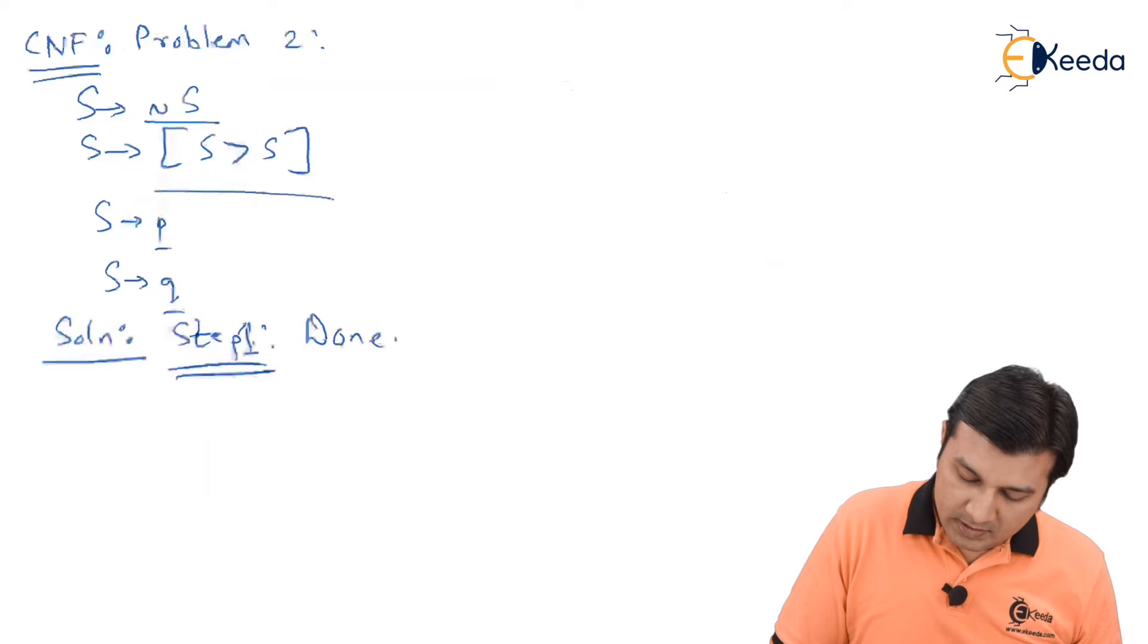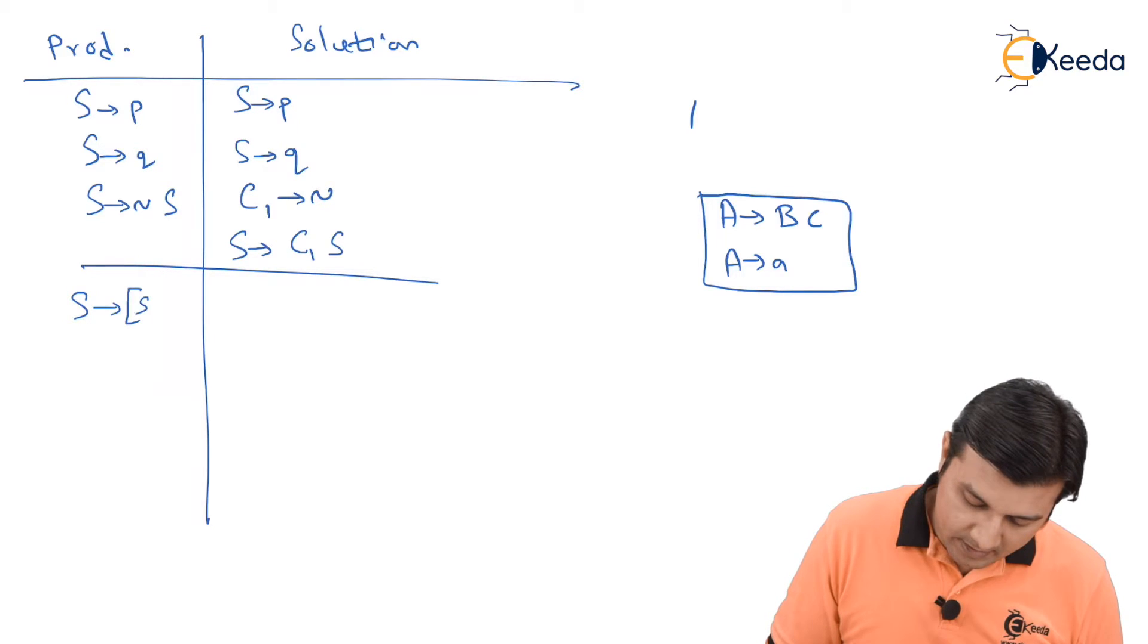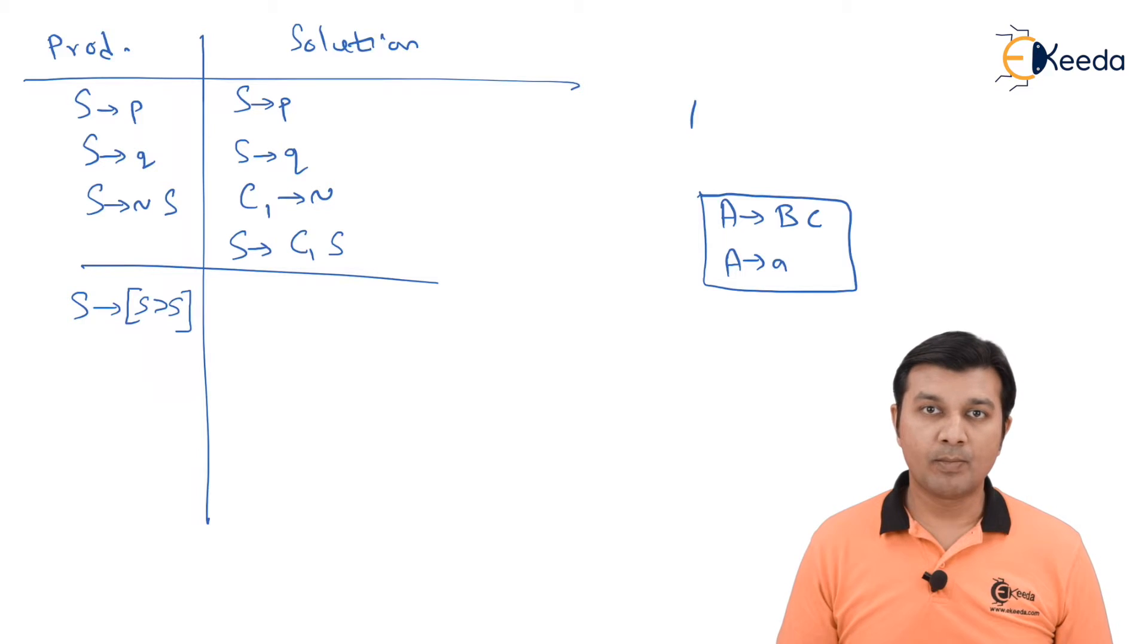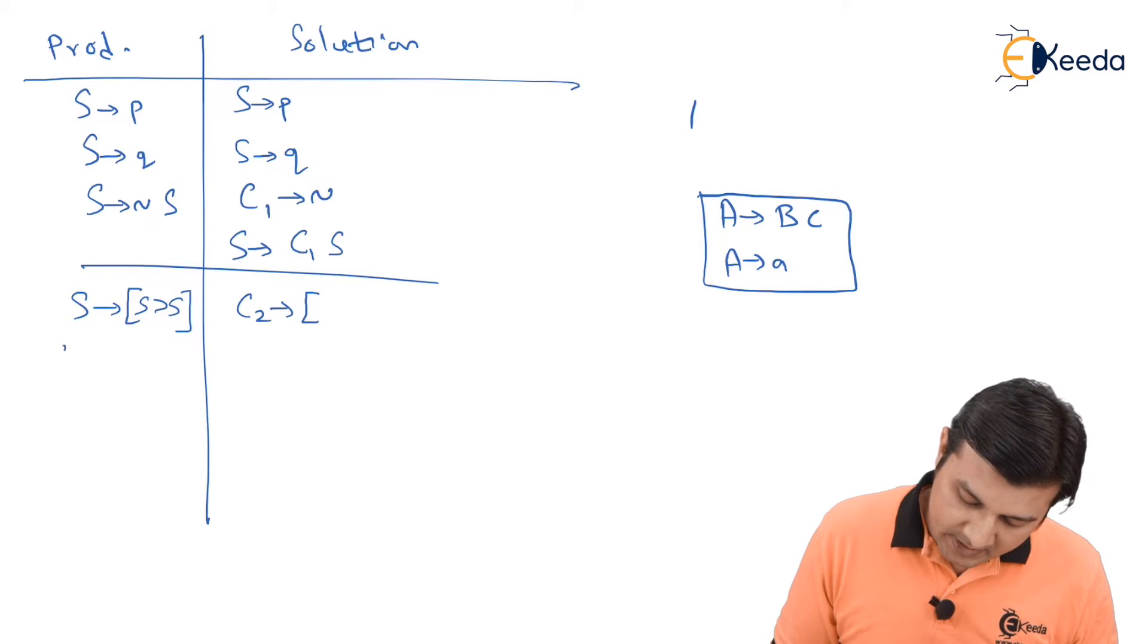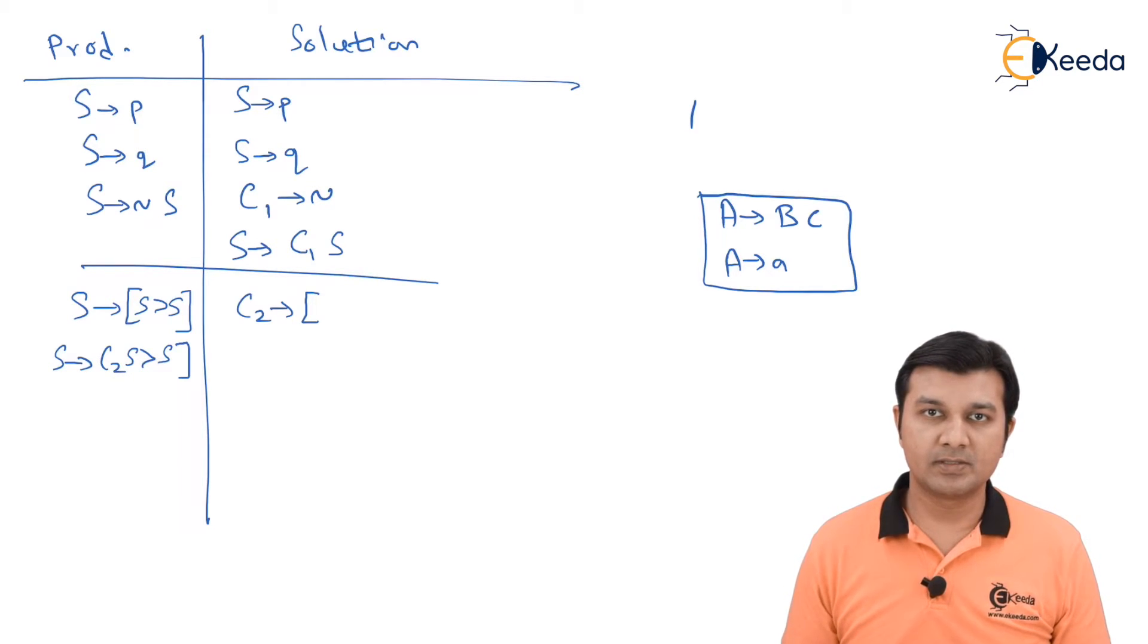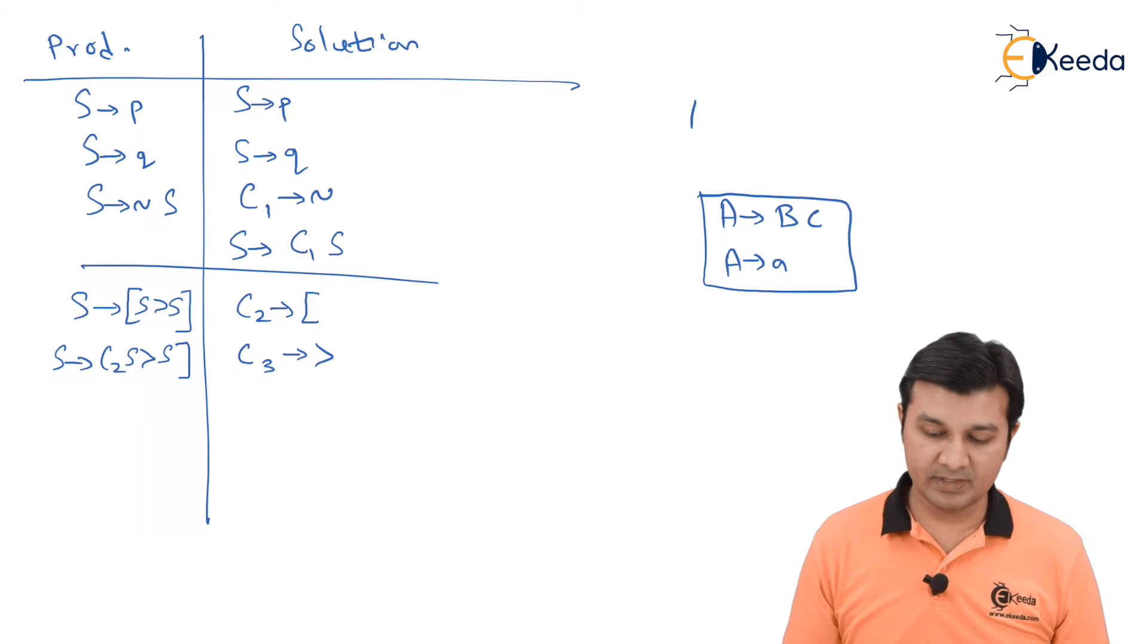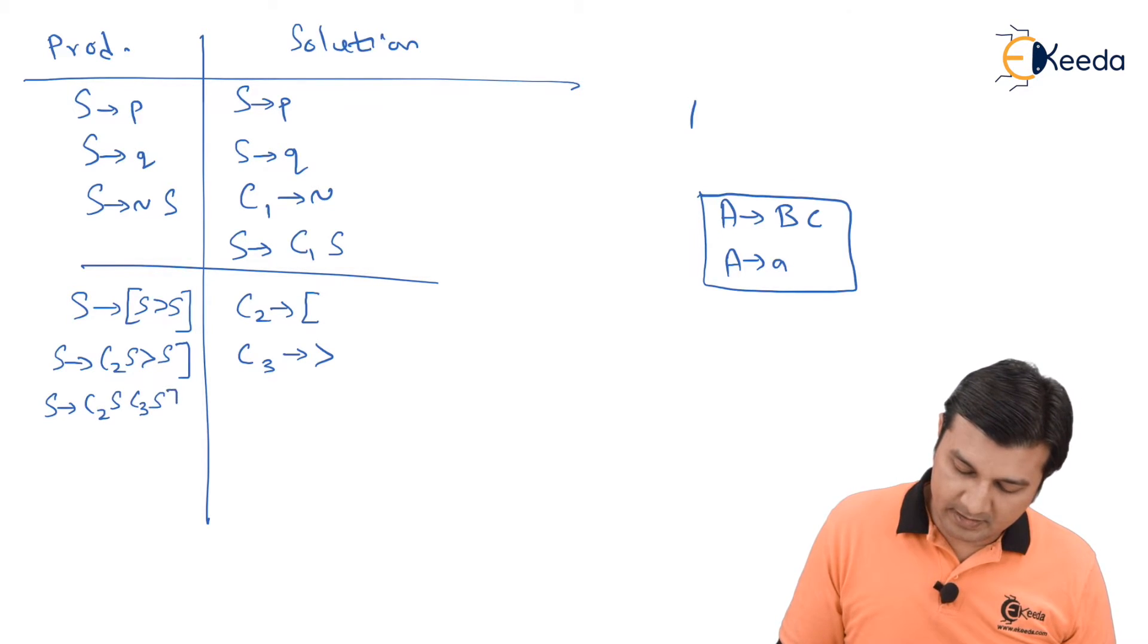Let us consider the final production. Let us write my S is giving me square bracket S greater than S square bracket. Now, you remember the rule. Replace it by temporary variables. Let us say my C2, I am assuming that C2 is giving me this open bracket that makes this S to have C2 S greater than S square bracket. Again, I see that there is existence of two more terminals. Now I say introduce one more temporary variable. Let us say C3 and let us call C3 as a greater than derivation production. That gives my S as C2 S C3 S square bracket.